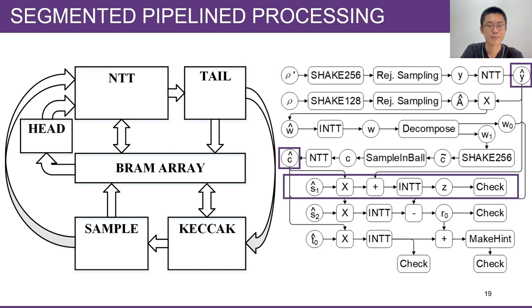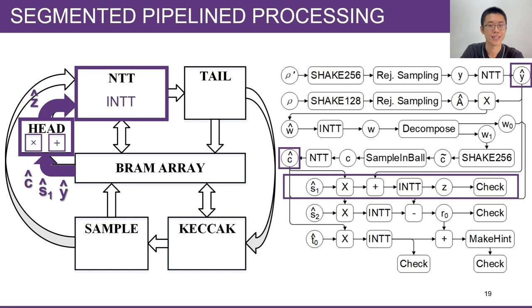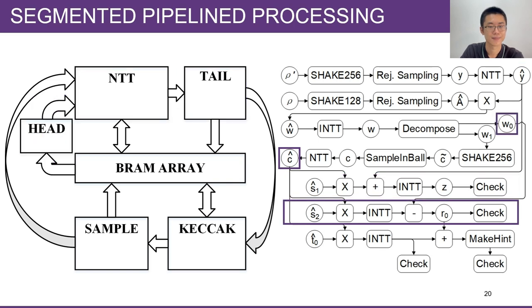For the first multiplication, c times s1 plus y. All the operands are stored in BRAM in NTT domain. So the HEAD module performs c times s1 plus y in NTT domain, coefficient by coefficient, and the output is sent to the NTT module for an iNTT transform, and the output of the NTT, that is z, is checked by the TAIL module immediately.